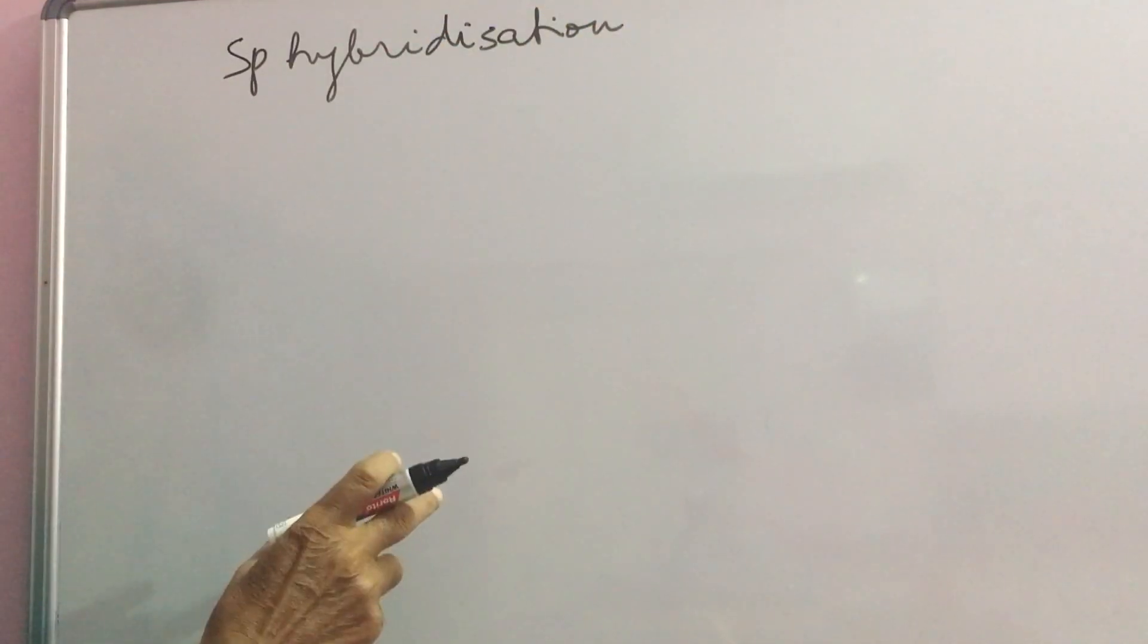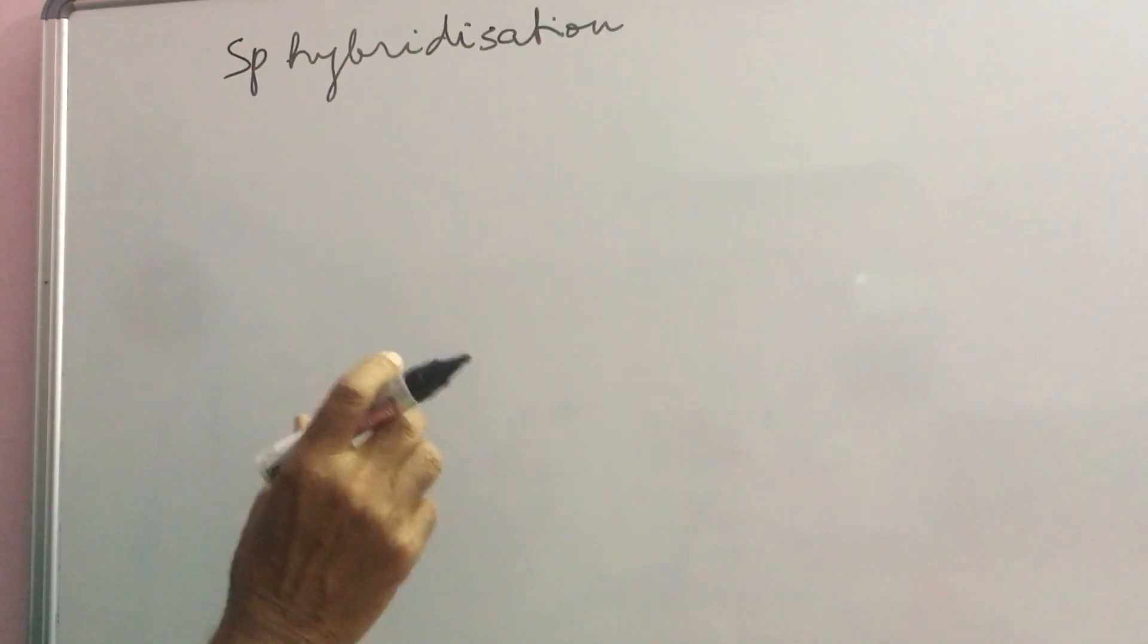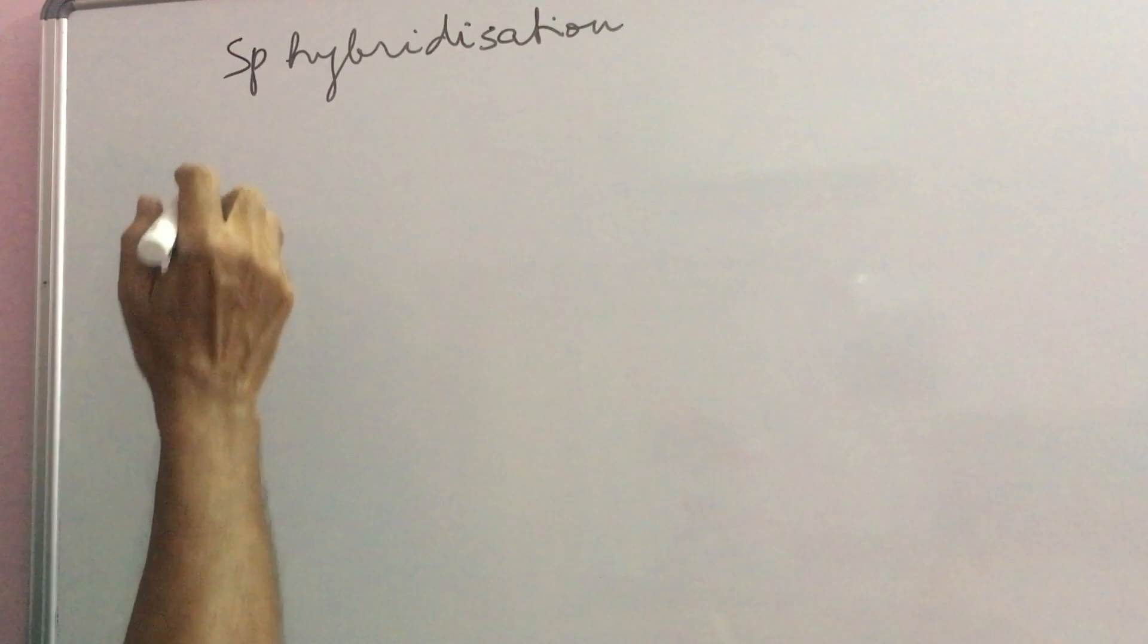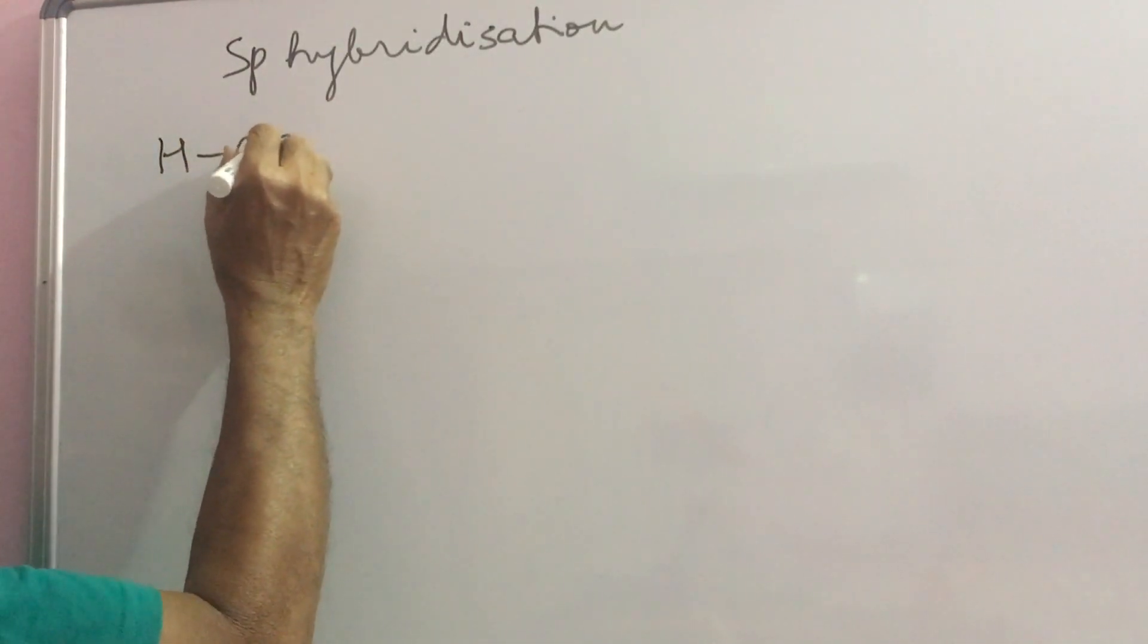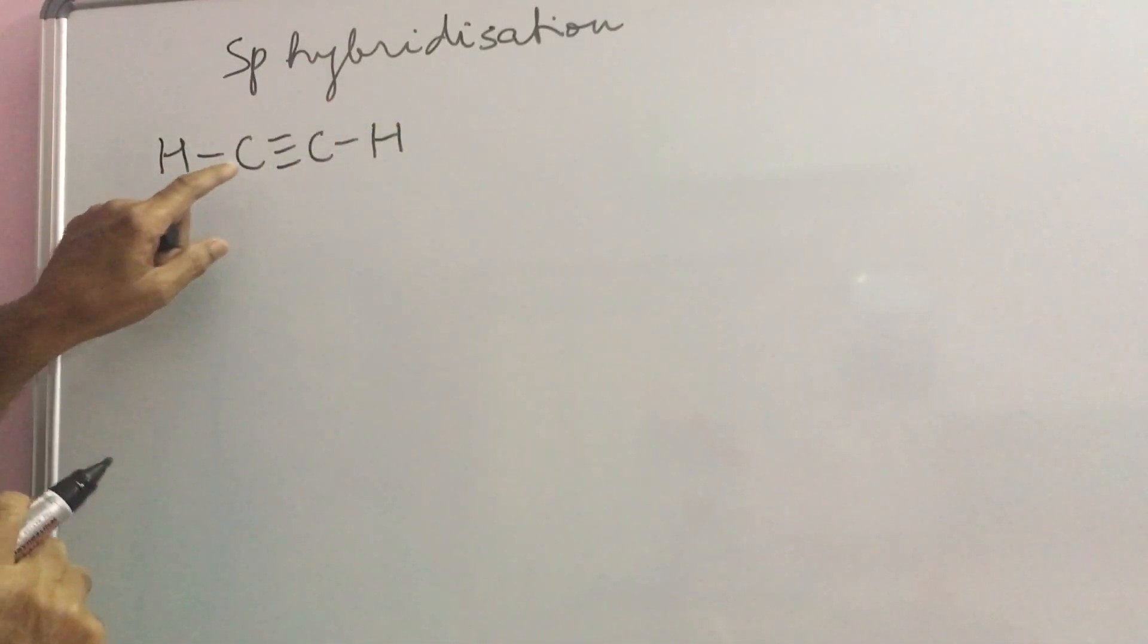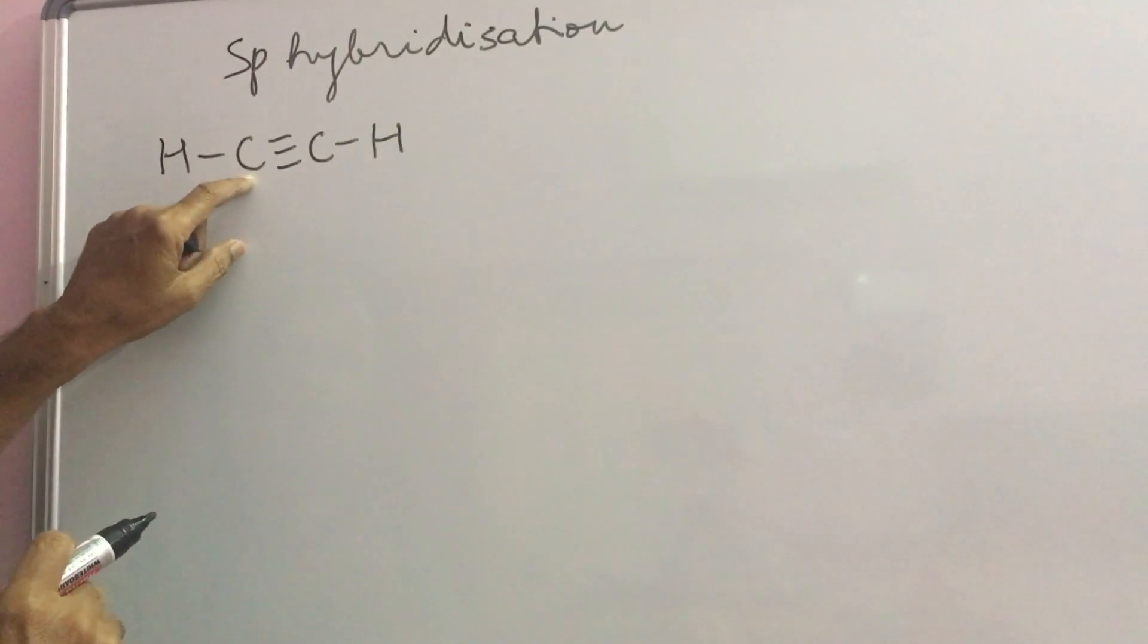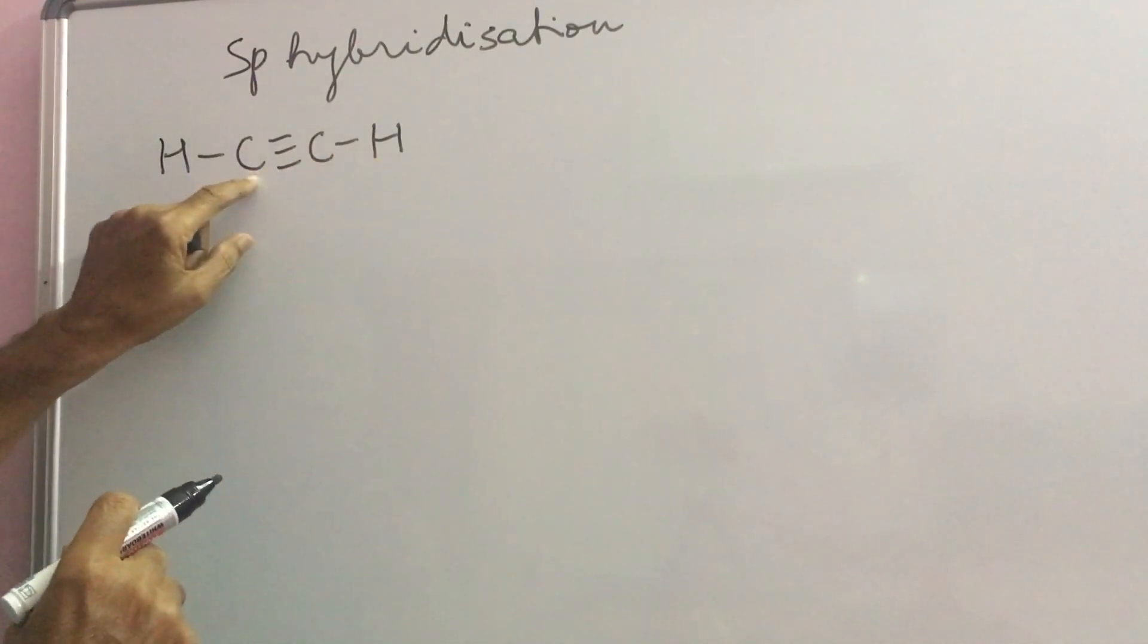This type of hybridization takes place when carbon has to form bonds with only two atoms like this. This carbon is forming bonds with H and C, this C with this H and this C.